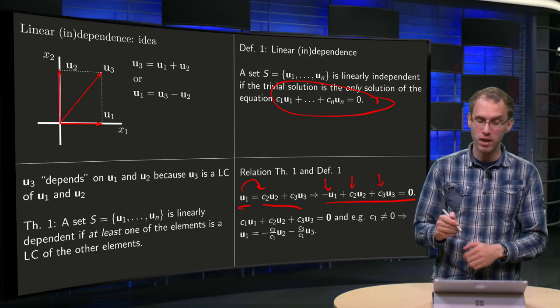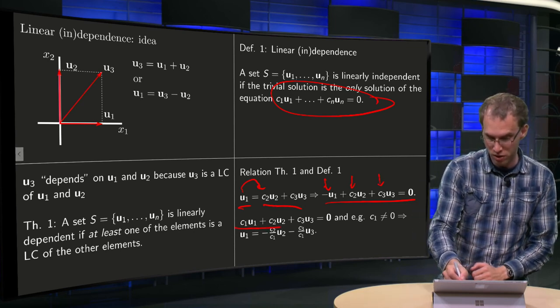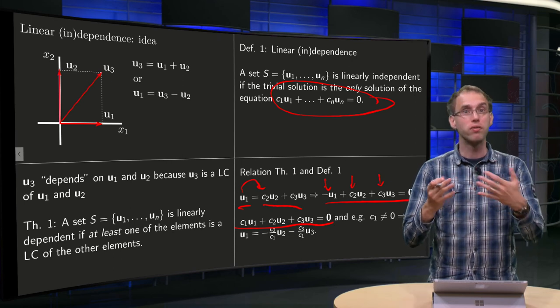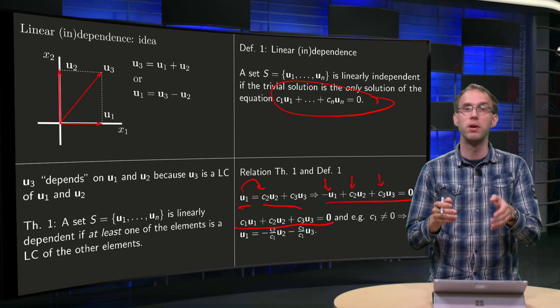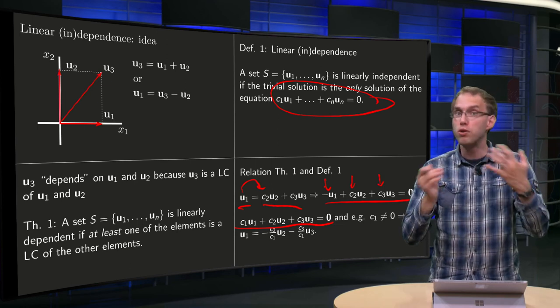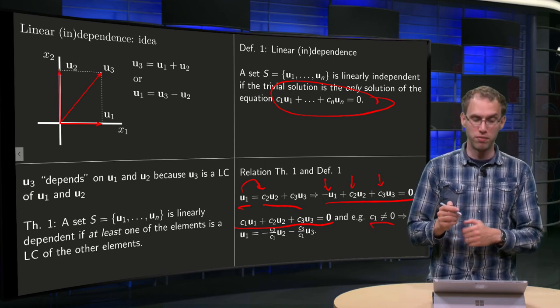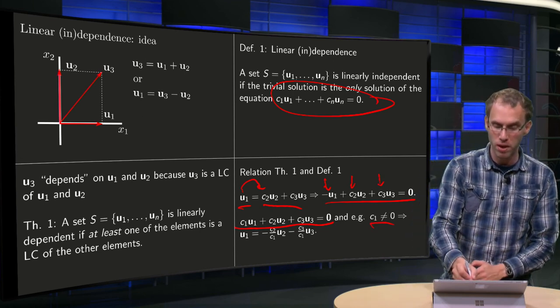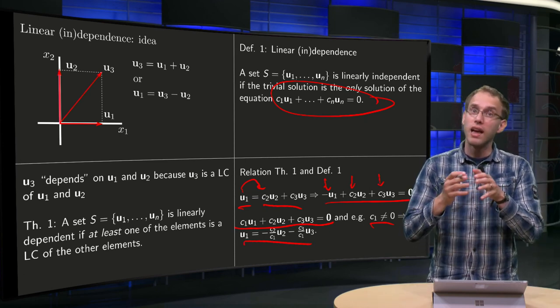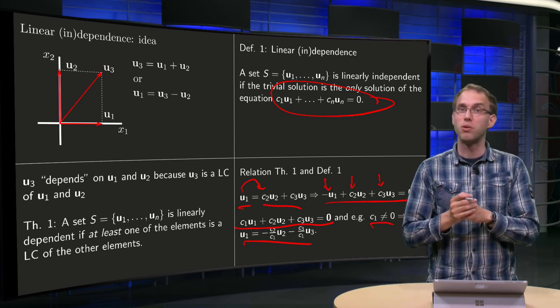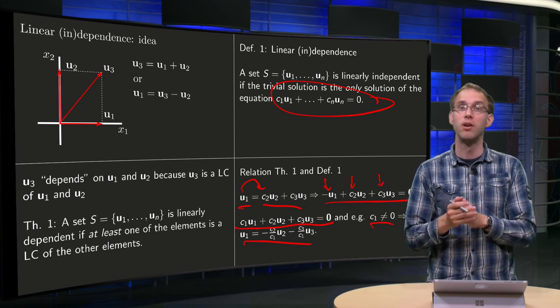Let's look at it the other way. Suppose our set is dependent in the sense of the definition, so this equation over here has a non-trivial solution. Now one of the three c, c1, c2 or c3 or all of them, but at least one of them is non-zero. So suppose for example that it is c1, if c1 is non-zero then you can divide by it and solve for u1. And you see that u1 is a linear combination of u2 and u3. So if a set is dependent according to the definition then you see that you can express one of its members as a linear combination of the others, which is a statement according to the theorem.